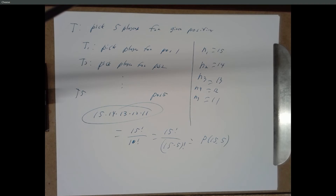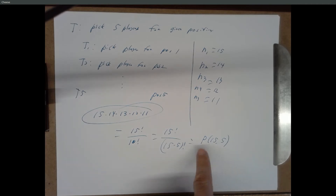But order matters here because we're assigning people to particular positions. We're not just picking five names out of a hat — we're picking position 1, position 2, position 3, 4, and 5. If you pick people A, B, C, D, E then person A is position 1. If you pick E, D, C, B, A then person E is position 1. So picking people and assigning them to positions imposes an ordering on that selection — it's the number of ordered ways we can choose five out of 15.